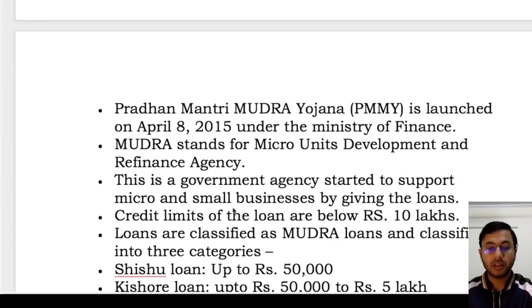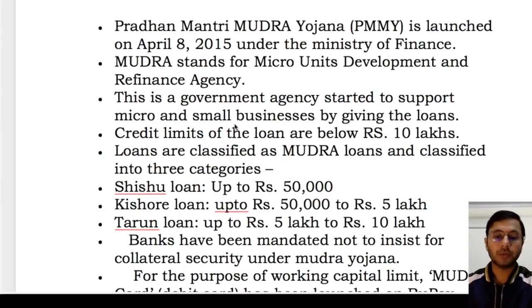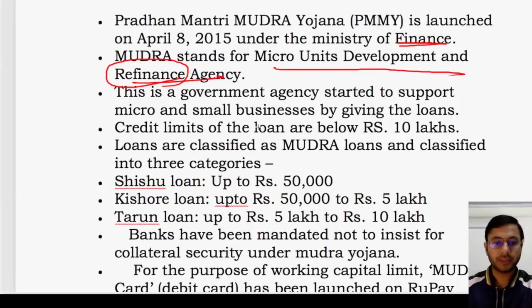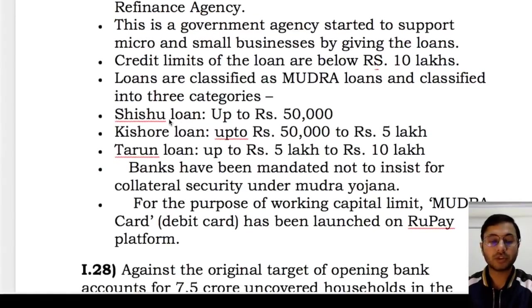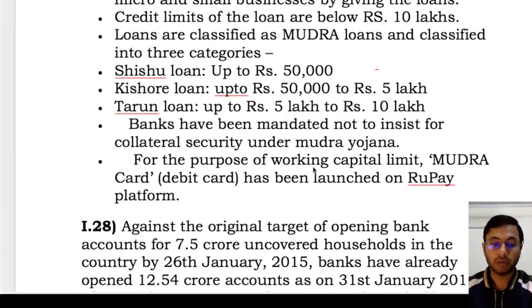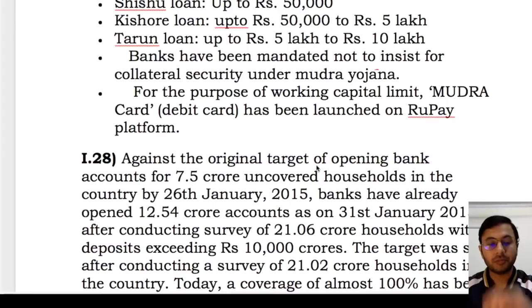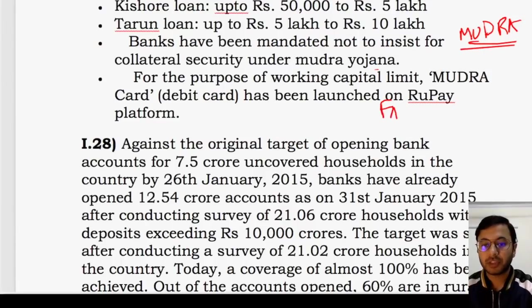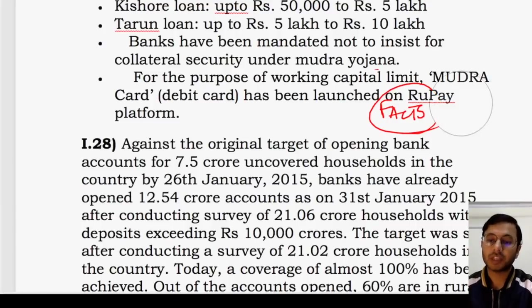MUDRA was launched in 2015 under Ministry of Finance. Full form: Micro Units Development and Refinancing Agency. Credit limit is 10 lakh: up to 50,000 is Shishu; 50,000 to 5 lakh is Kishore; 5 lakh to 10 lakh is Tarun. No collateral security is required. MUDRA card is a debit card for utilizing the working capital limit. Your homework is to check the MUDRA website for recent facts and coverage figures.